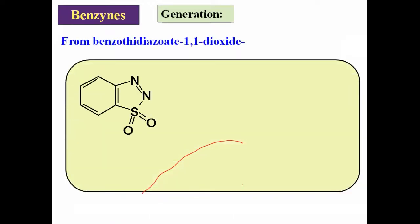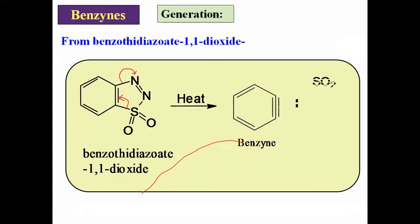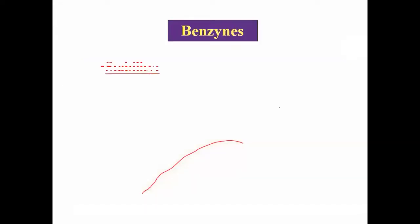Fourth method: from benzothiadiazole 1,1-dioxide. When this compound is heated, it undergoes decomposition — the two C-N bonds break, a carbon-carbon triple bond forms, and it loses both N2 gas and SO2. This gives benzyne as the product.